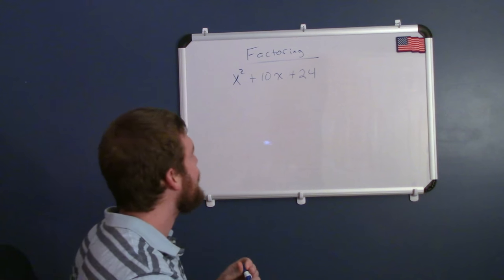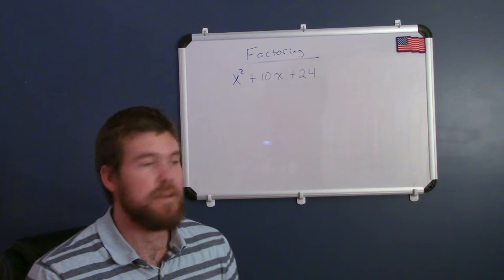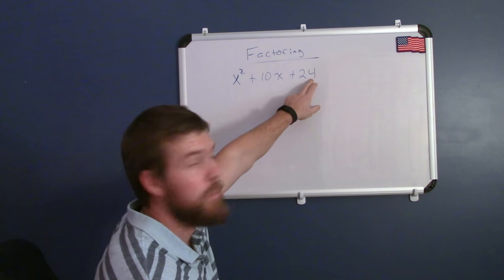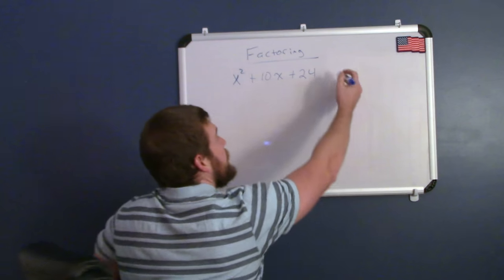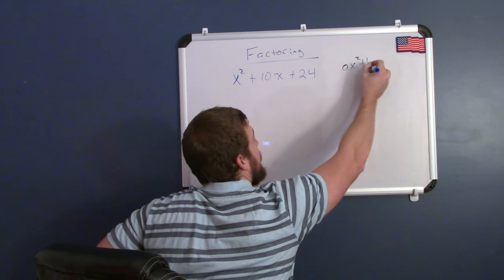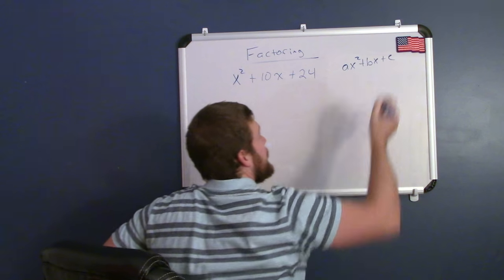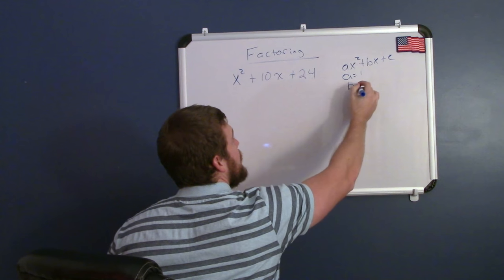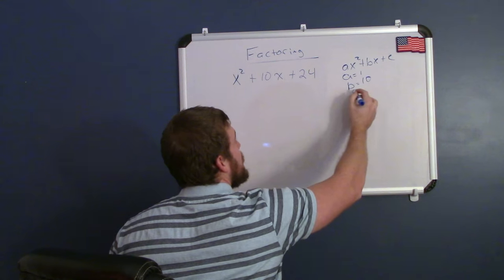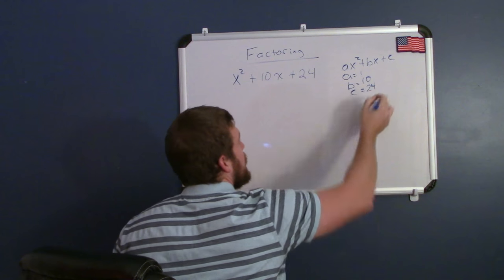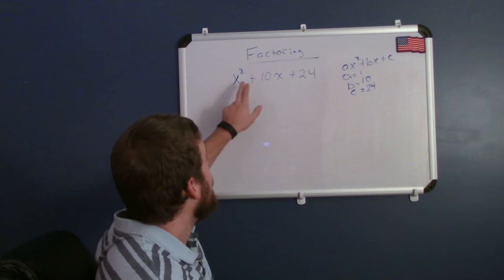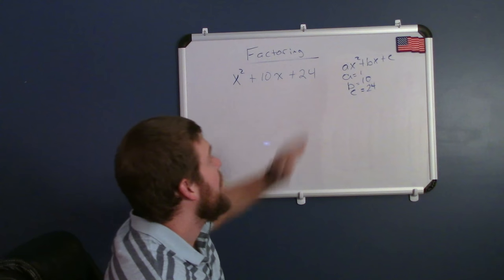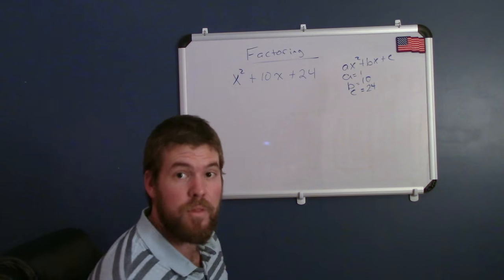So here we have a basic quadratic setup with x squared, x here in the middle, and a number. This form is ax squared plus bx plus c, where our a value in this case is 1, our b value is 10, and our c value is 24—a being the coefficient in front of x squared, b being the coefficient in front of the x, and c being the last number there.